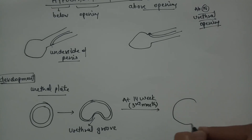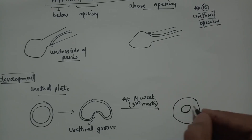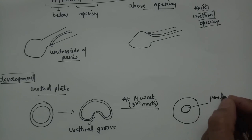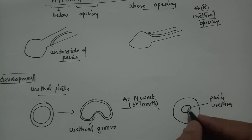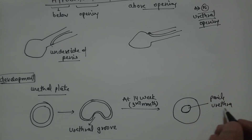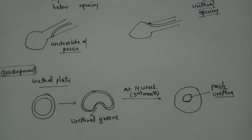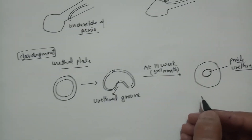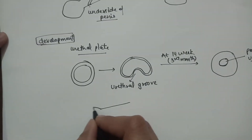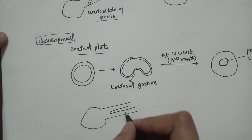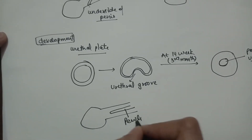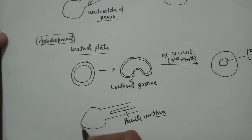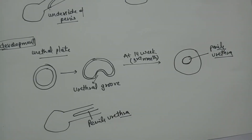A canal forms and this becomes the penile urethra. However, this canalization does not form the complete urethra — the tip of the urethra at the glans is still not formed.